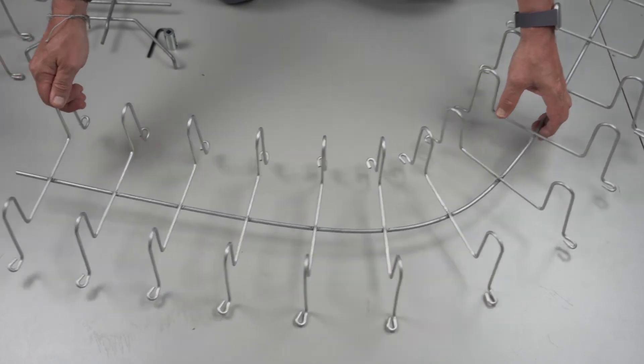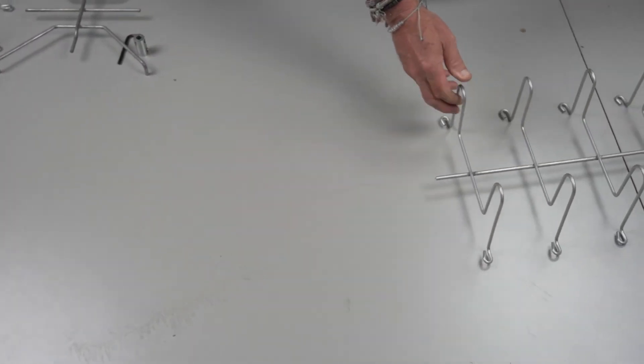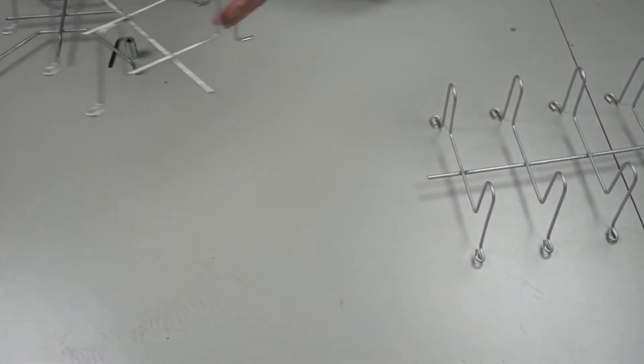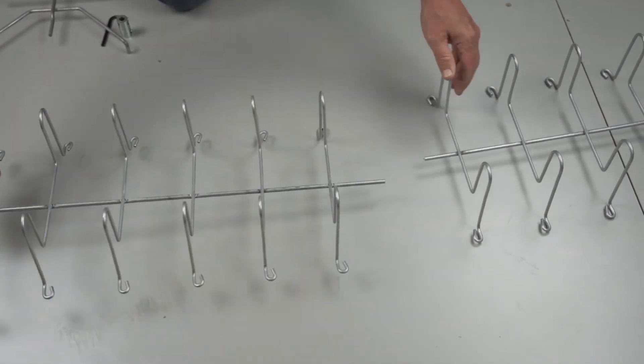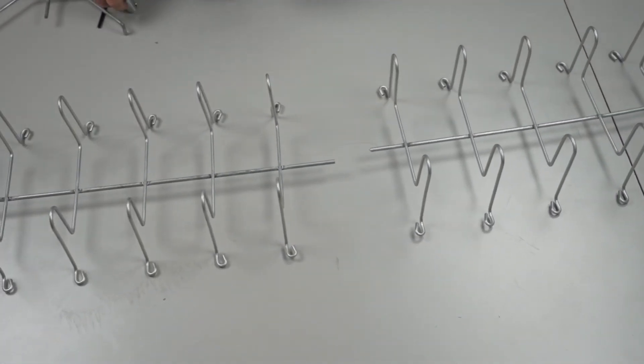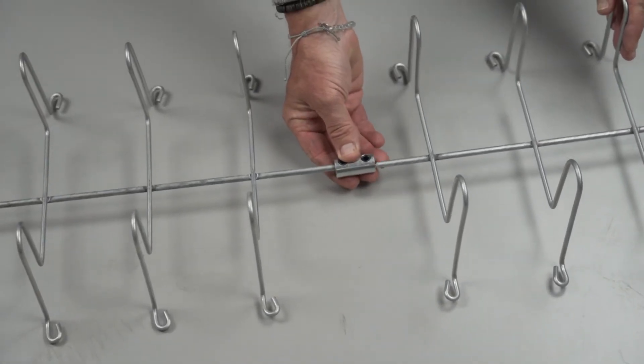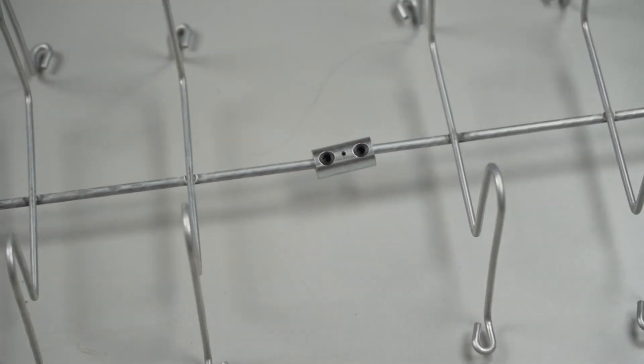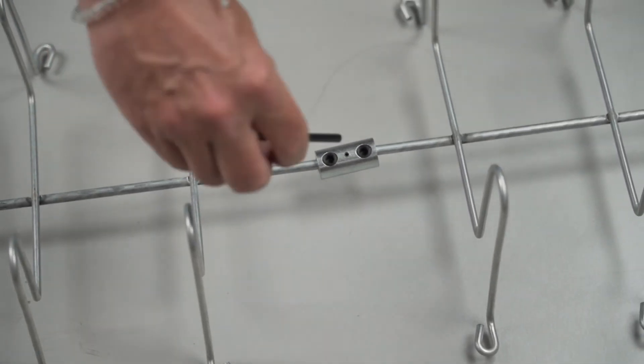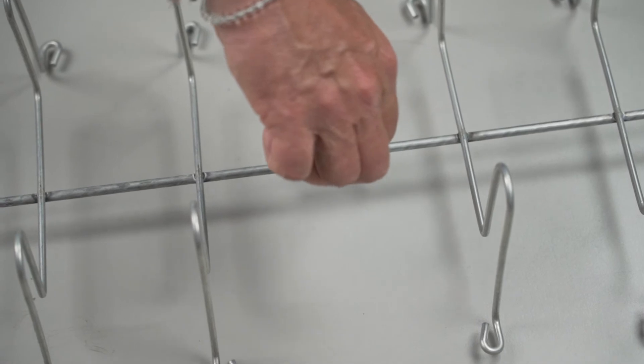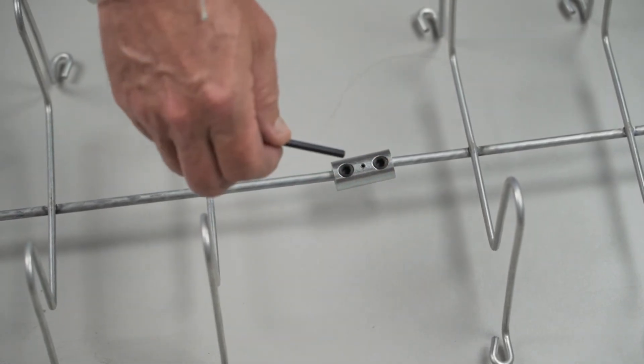When we join two sections of tray together we have an integral part that's called a CB12 and it's simply a barrel bolt that we'll install between the two sections. We'll then take an Allen set screw and tighten that up to make a bonded connection as well as our mechanical connection.